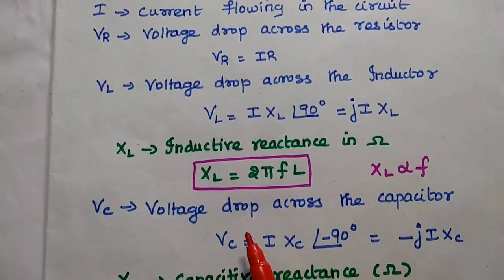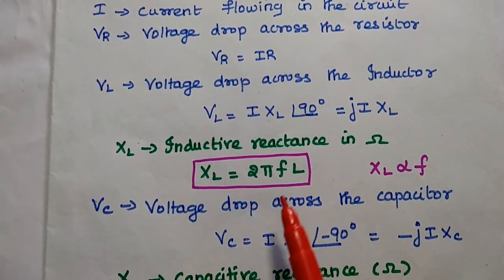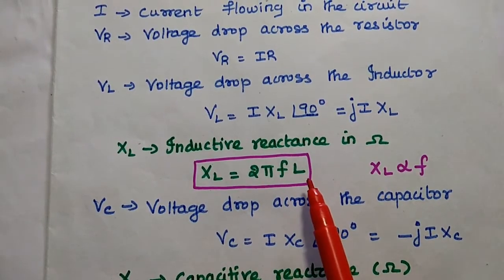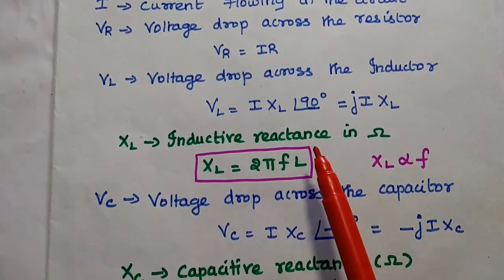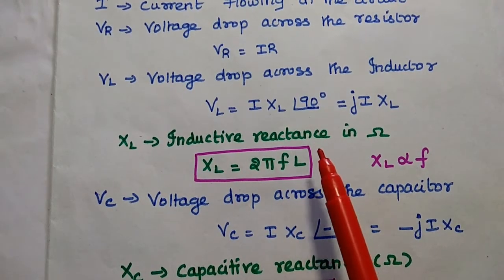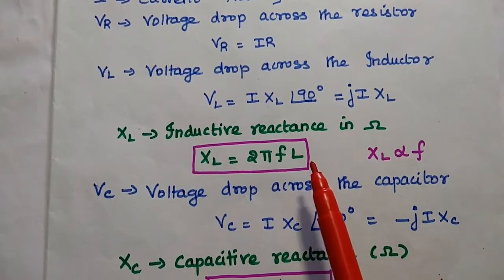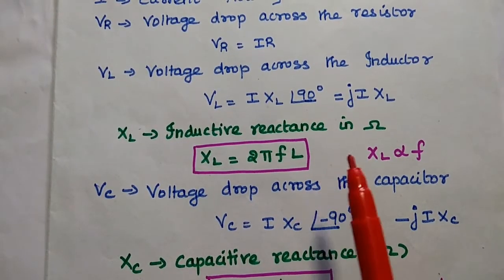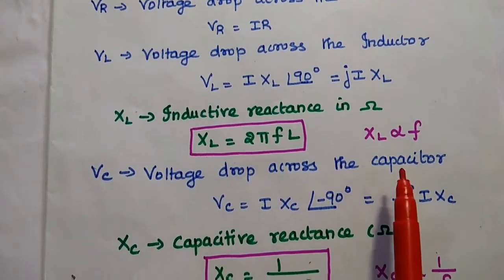We can obtain the inductive reactance value using the formula XL = 2πFL. Its unit is Ohm, because it is the reactance of the inductance to the current flowing through it. XL is directly proportional to frequency.